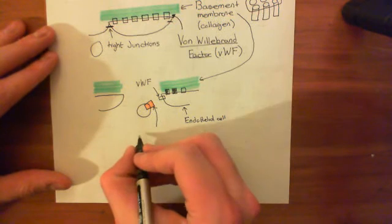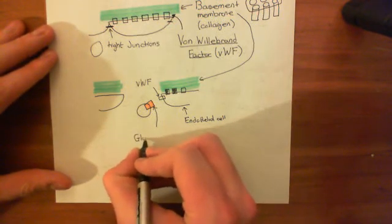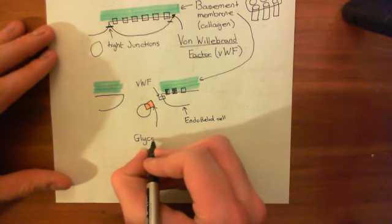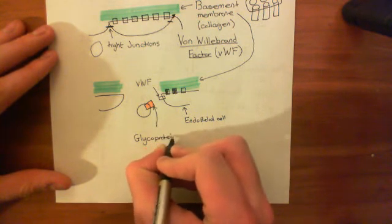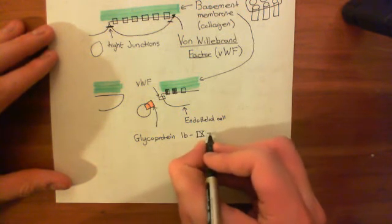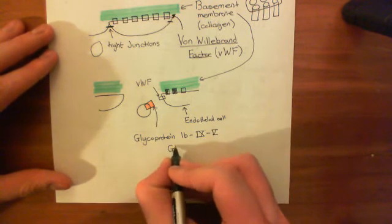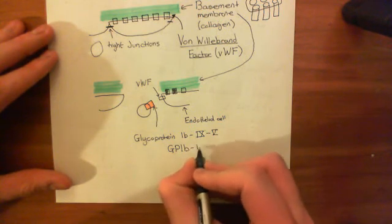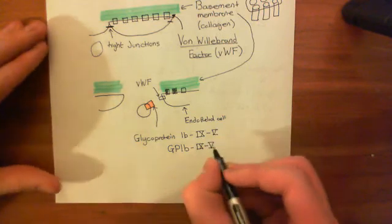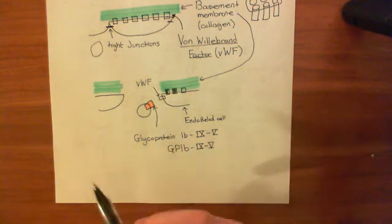It is called glycoprotein 1B, and it's then got the title 9-5. So glycoprotein 1B-9-5, but often people don't like that - it's a bit of a mouthful. So instead they reduce it to GP1B95, which is a truly fantastic name. Basically, this is a protein which sits in the membrane of thrombocytes, or platelets, and it can bind to von Willebrand factor.